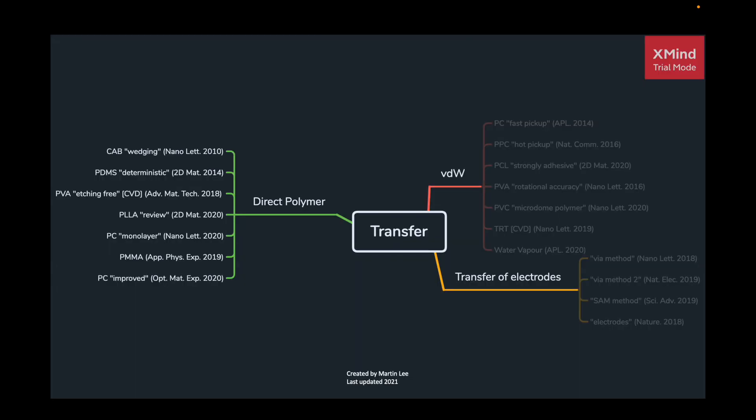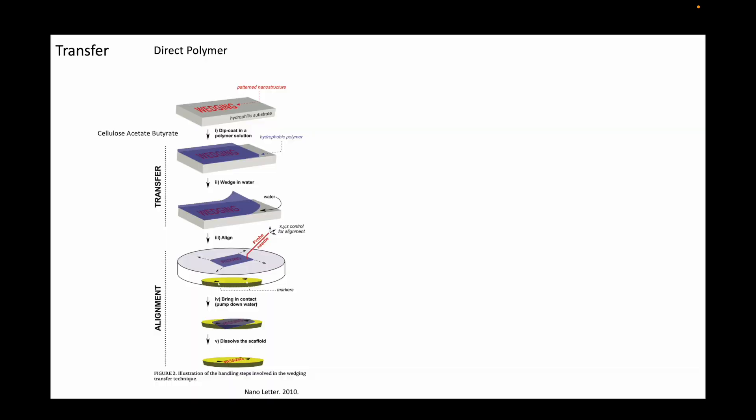The second class of transfer methods is by using the polymers directly without the 2D flakes. I decided to first show the van der Waals pickup technique using HBN, because that is easier and these methods rely on the same principles as in the van der Waals pickup techniques.